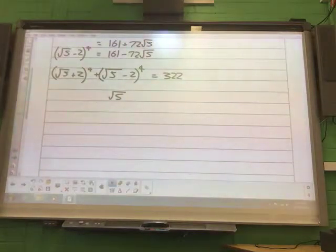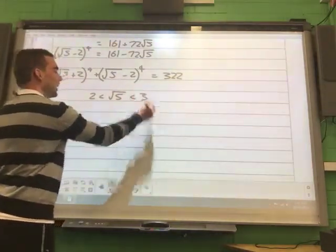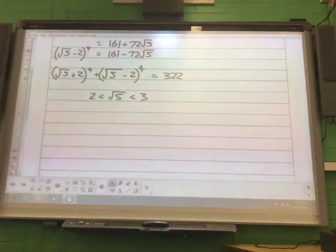Root 5. What two whole numbers does that lie between? 2 and 3. 2 and 3. Okay. So 2, which is less than root 5, which is less than 3.